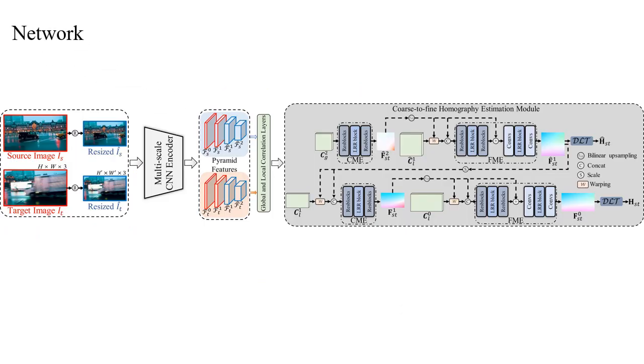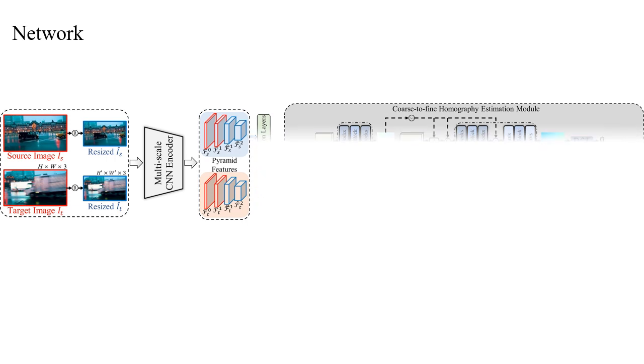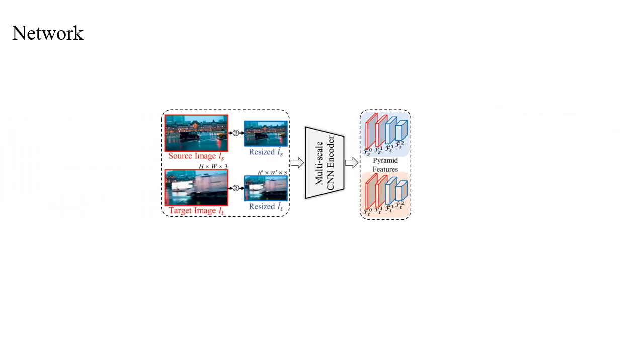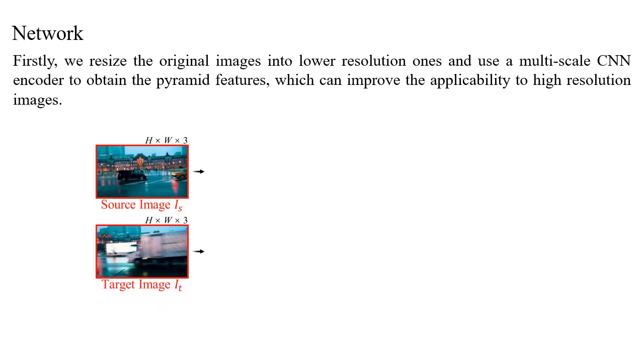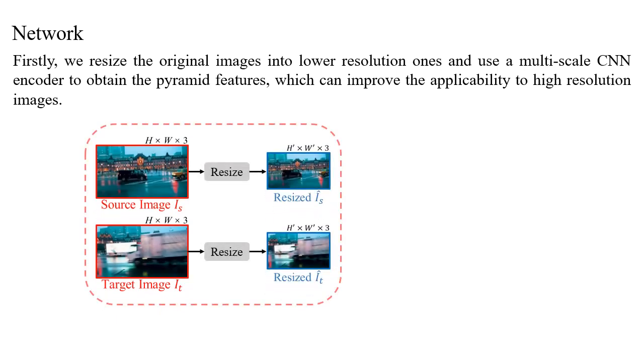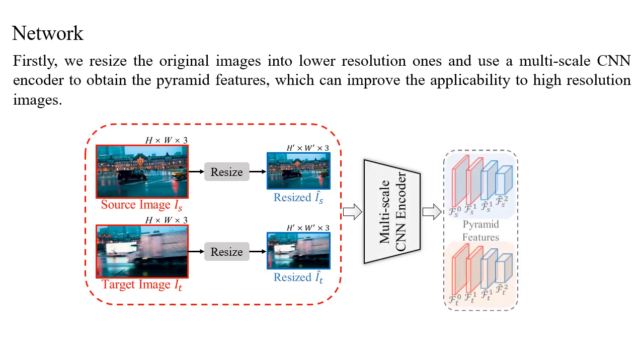Here shows our network architecture. Firstly, we resize the original two images into lower-resolution ones to improve the applicability to high-resolution images, and use a multi-scale CNN encoder to obtain the pyramid features.